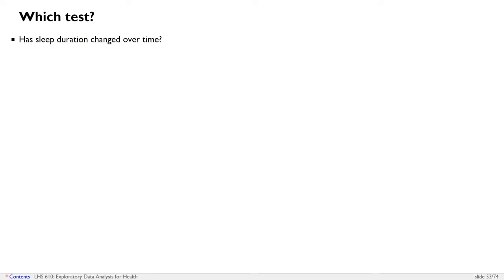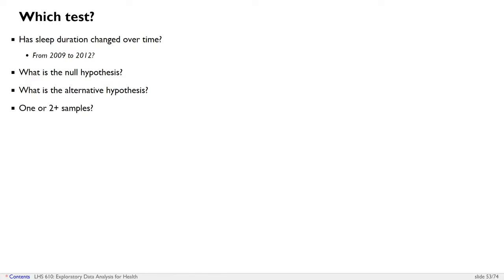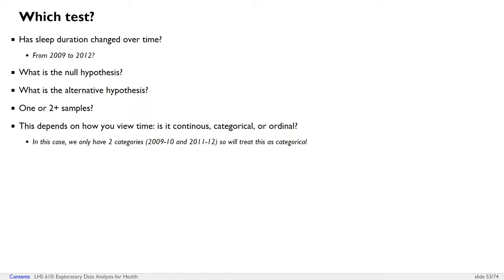Let's say we wanted to know if sleep duration has changed over time, specifically between 2009 and 2012. Our null hypothesis is that sleep duration has not changed over time. The alternative hypothesis is that sleep duration has changed. This is a two-sample test — people who took the survey in 2009 are one sample, and those who took it in 2012 are a second sample. Since we're only looking at two time points, we'll treat this as two categories.